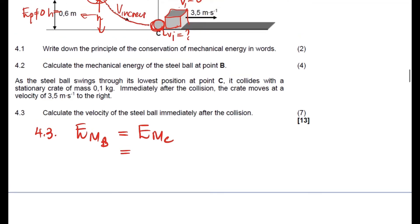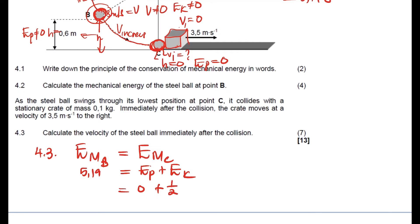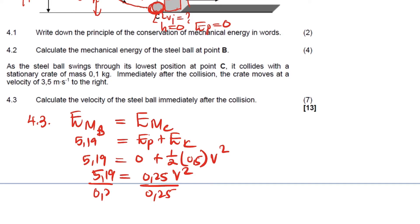We know mechanical energy at B is 5.19 joules. At point C, the height is zero so gravitational potential energy equals zero. The mechanical energy at C is therefore just kinetic energy: ½(0.5)V² = 0.25V². Setting 5.19 = 0.25V² and dividing both sides by 0.25, we solve for V.